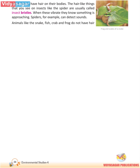Spiders, for example, can detect sounds. Animals like the snake, fish, crab and frog do not have hair on their bodies. Snakes and fish have scales on their skin.